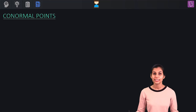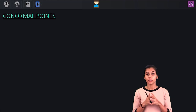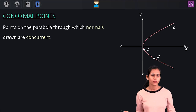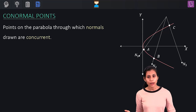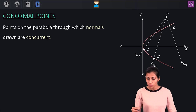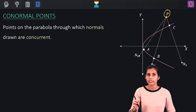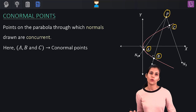Let's begin with the concept of co-normal points. Consider three distinct points A, B, C on a parabola such that when you draw normals at these three points, they come out to be concurrent — that is, all these normals pass through a common point. In this case, A, B, and C are called co-normal points.